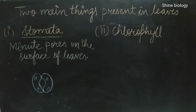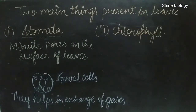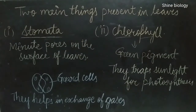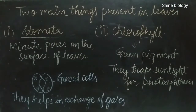Stomata have two guard cells which are bean-shaped. Their main function is to help in the exchange of gases with the environment. Chlorophyll is basically a green pigment — this is why plants look green in color. Its main function is to trap sunlight, which is essential for the photosynthesis process to start. Photosynthesis is basically the formation of food in the presence of sunlight.